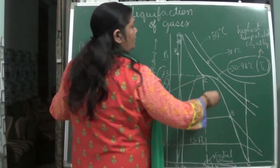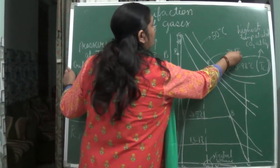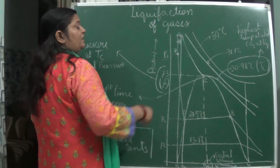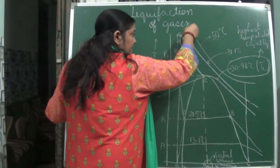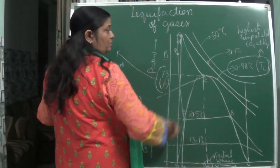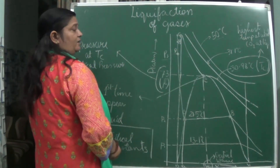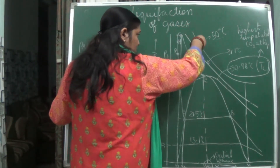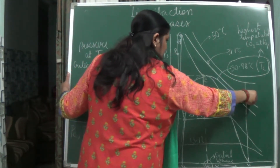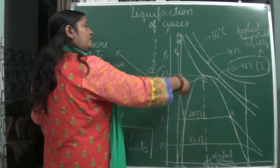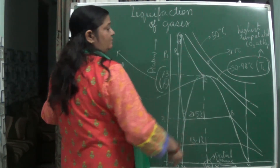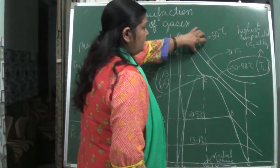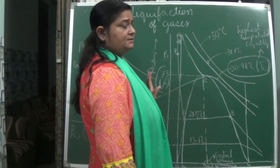Then at 31.1 degrees Celsius, he saw that at this temperature, with pressure more than 73 atmospheric pressure, carbon dioxide is also existing in the gaseous form. At these two temperatures, carbon dioxide was showing just the behavior of an ideal gas.